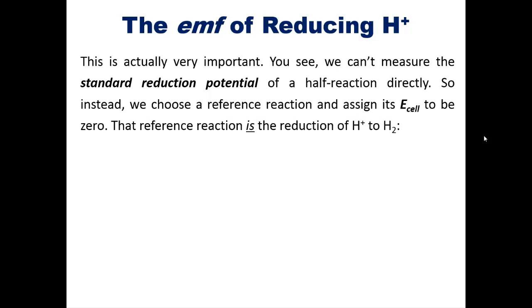This actually is very important. You see, we can't measure the standard reduction potential of a half reaction directly, because in reality, redox reactions occur with reduction and oxidation happening virtually simultaneously. So instead, we choose a reference reaction and assign its E subcell to be zero. That reference reaction happens to be the reduction of H+ to H2, as shown here. Zero volts.